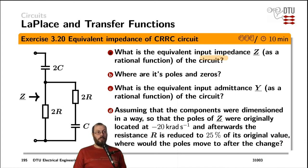Once more, an impedance calculation for a circuit with two capacitors and two resistors. Where are the poles and the zeros? What is the admittance of the circuit? And where do the poles move if one of the components changes?